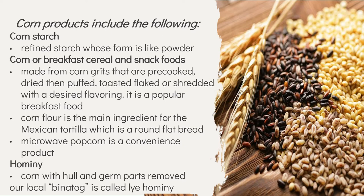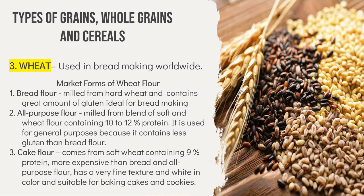Wheat, oats, and barley are defined as processed grains for human consumption. Wheat is used in bread making worldwide and has three main market forms: bread flour, all-purpose flour, and cake flour. Bread flour is milled from hard wheat and contains a great amount of gluten, ideal for bread baking. All-purpose flour is milled from a blend of soft and hard wheat containing 10–12% protein and is used for general purposes. Cake flour comes from soft wheat containing 9% protein, is more expensive, has a very fine texture, is white in color, and is suitable for baking cakes and cookies.